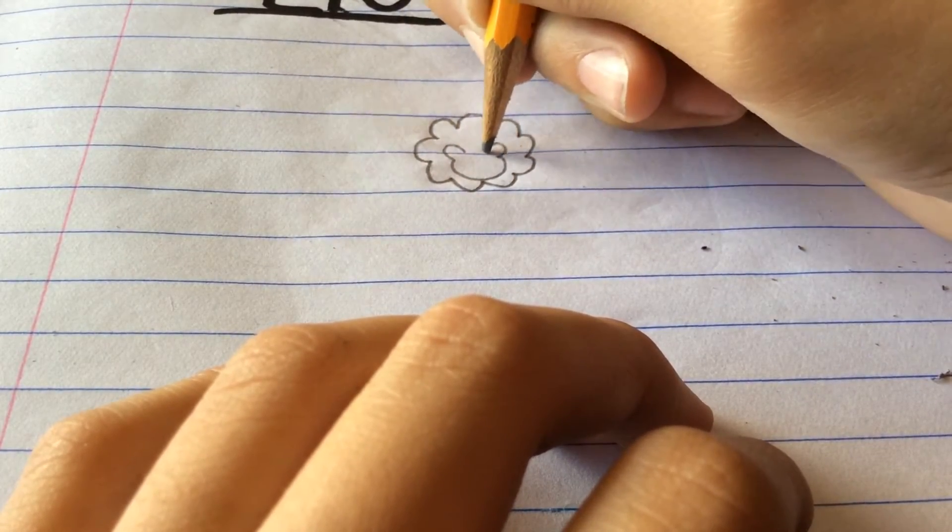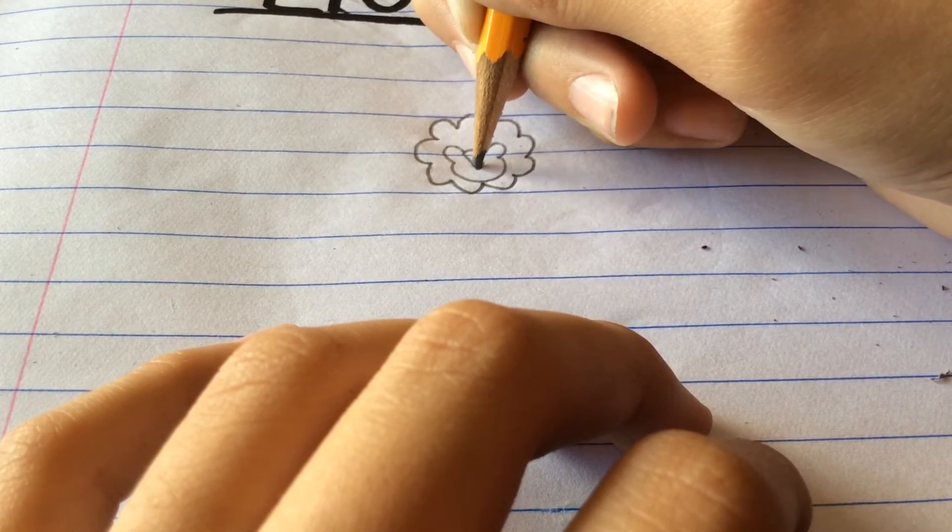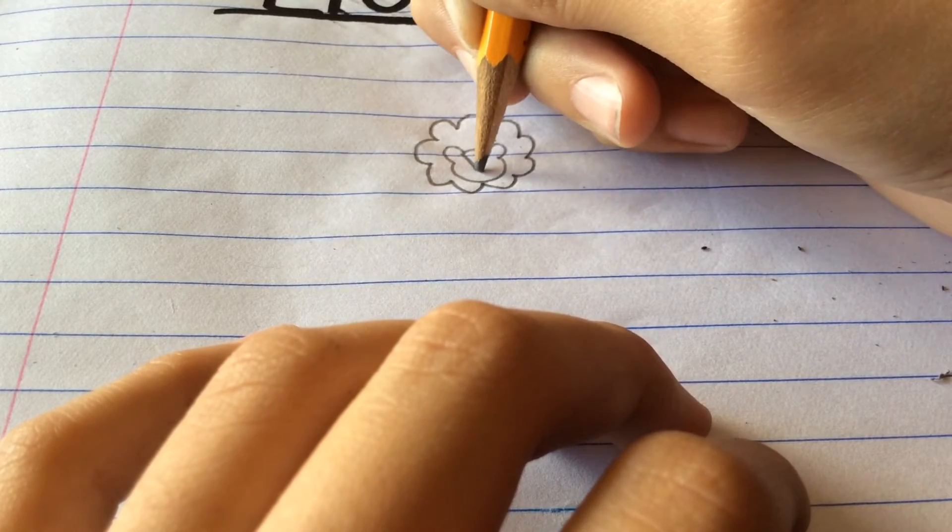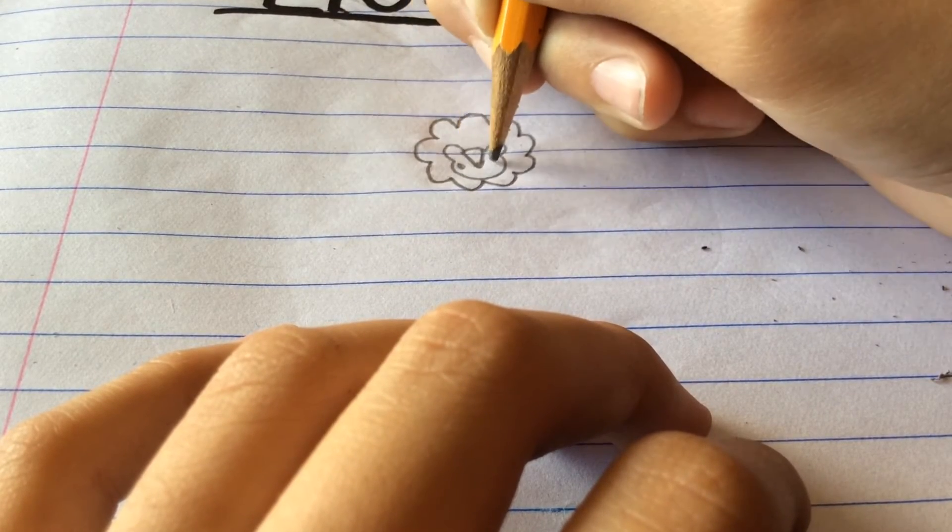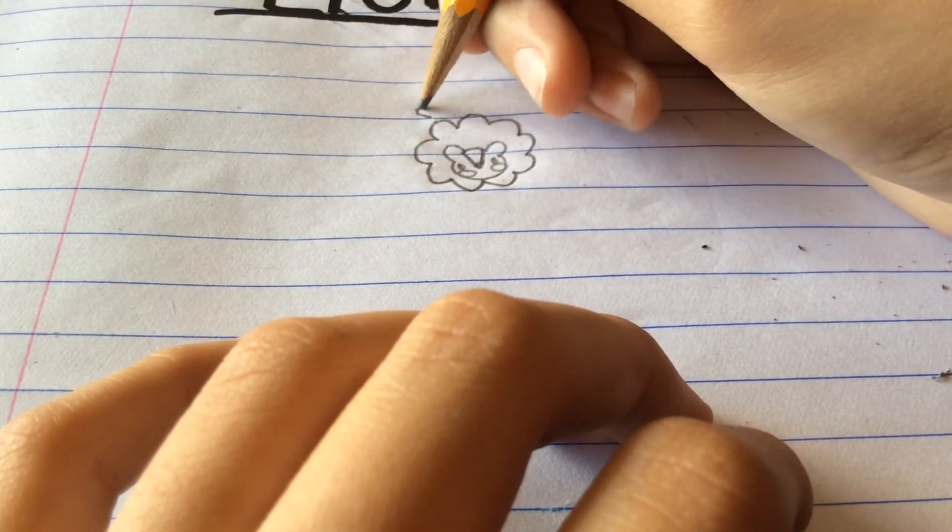Next, you draw its head, and then you draw its thing—sorry I forgot—its eyes, cheeks, and heart.